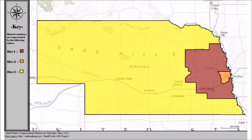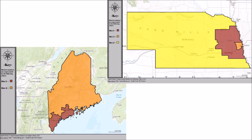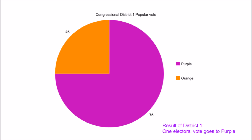Instead, Nebraska and Maine give their electoral votes partially based off of the votes of the congressional districts. The process works like this.